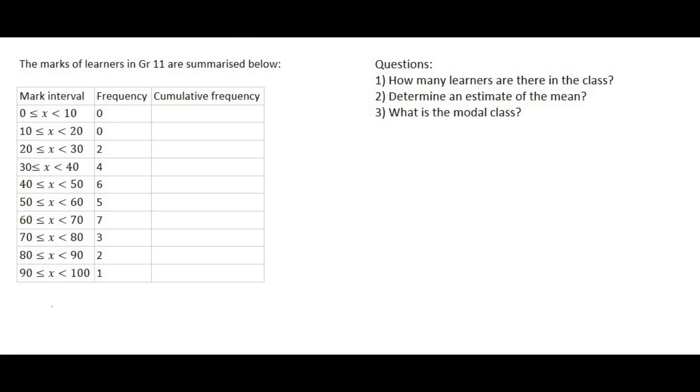In this question we are given the marks of grade 11 learners. The way this table works is in the first column we have the mark interval. So for example there were three people who got between 70 and 80 percent for their test.